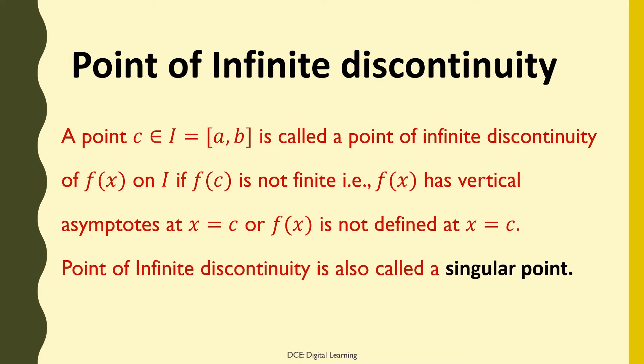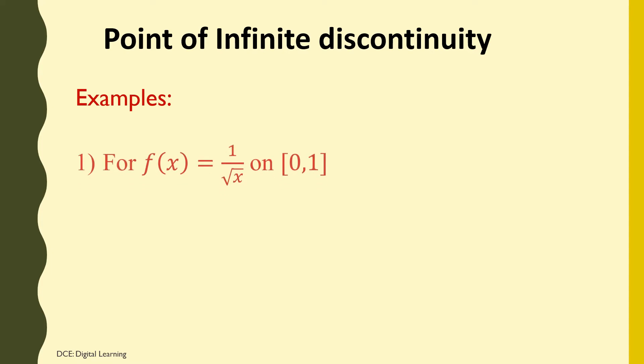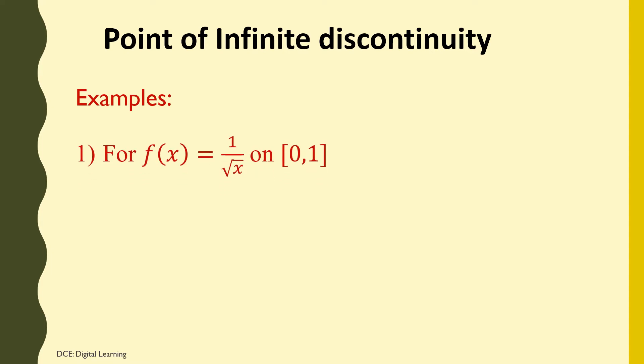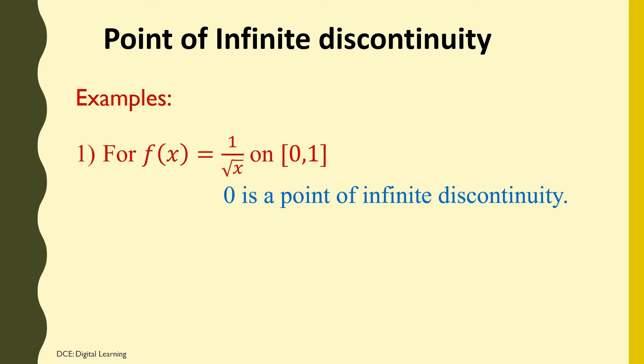A point of infinite discontinuity is also called a singular point. For example, f(x) = 1/√x on the closed interval [0, 1]: this function is defined everywhere except x = 0. At x = 0, the denominator becomes 0 and the function is not defined, so 0 is a point of infinite discontinuity and is the lower limit of this interval.